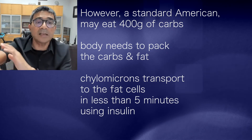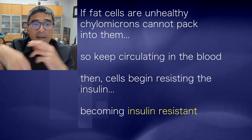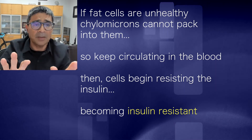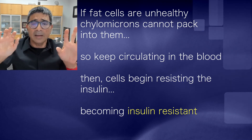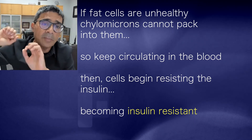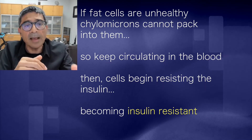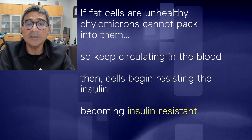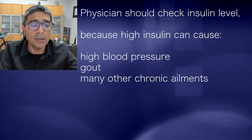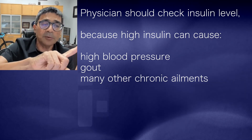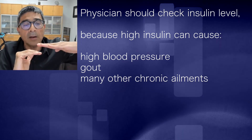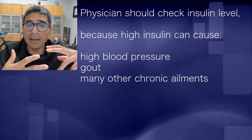Insulin activates an enzyme in your fat cells to do that. But if your fat cells are unhealthy and overstuffed, the fat remains in circulation too long because the fat cells can't take any more. They become insulin resistant to protect themselves, and the body starts overmaking insulin to pack more fat in. High insulin will increase your blood pressure, cause gout, and many other chronic ailments.